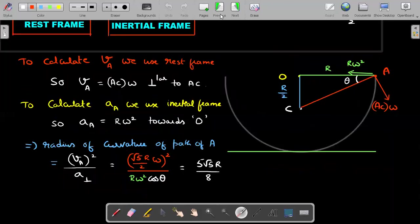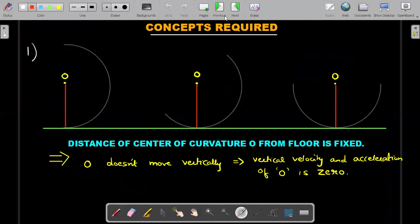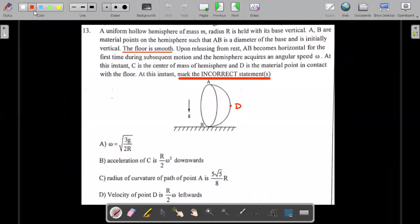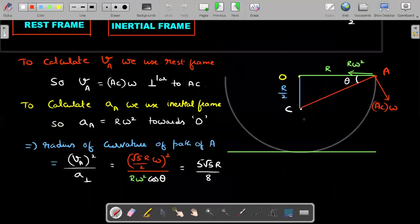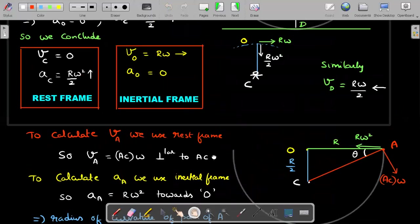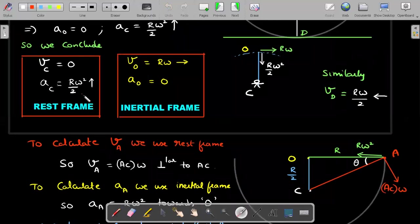Please remember in all of this you should not forget that it was incorrect options that were asked. So omega equal to root 3g by 2R is an incorrect option, so is part of the key. Acceleration of point C is R by 2 omega square downwards. This is very cunning way of asking. When we found acceleration of C, we found R omega square by 2 upwards.